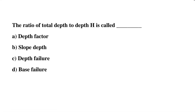Next question: the ratio of total depth to the depth H is called — Option A: depth factor, Option B: slope factor, Option C: depth failure, Option D: base failure. The correct answer is Option A, depth factor.